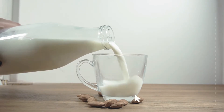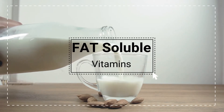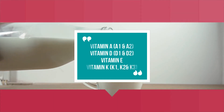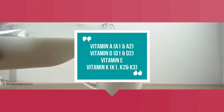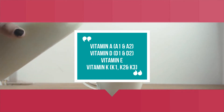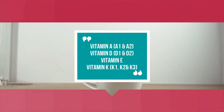In this video, we will discuss fat-soluble vitamins. Fat-soluble vitamins are of four types: Vitamin A, Vitamin D, Vitamin E, and Vitamin K. Vitamin A is of two types: A1 and A2. Vitamin D is of two types: D2 and D3. Vitamin K is of three types: K1, K2, and K3.